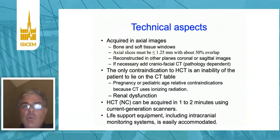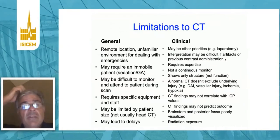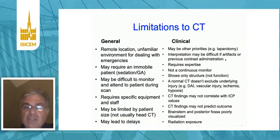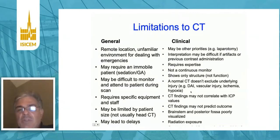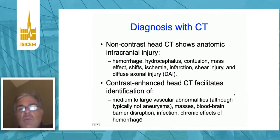Scans can be obtained in a very short period of time. There are some limitations. The major limitation, perhaps, is the remote location, taking the patient away from the ICU. It is well documented that transport can create risk. A significant clinical limitation is that CT doesn't always identify other underlying injuries such as diffuse axonal injury or earlier ischemia. The non-contrast CT shows us the anatomic pathology: hemorrhage, hydrocephalus, contusions, and so forth.